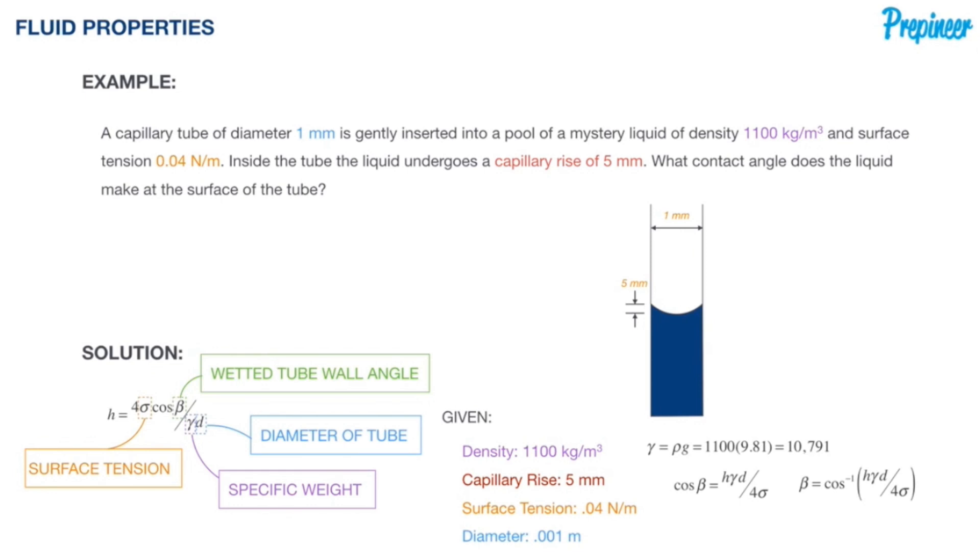Our last step is to take the inverse cosine of that equation we formulated. We're going to plug in our information, converting the capillary rise from 5 millimeters to 0.005 meters, putting in our specific weight as well as the diameter of 0.001 meters. There are a lot of areas to make little minor mistakes that will dramatically affect the angle you get, but in this case we find that the contact angle for this mystery liquid is equal to 70.3 degrees.